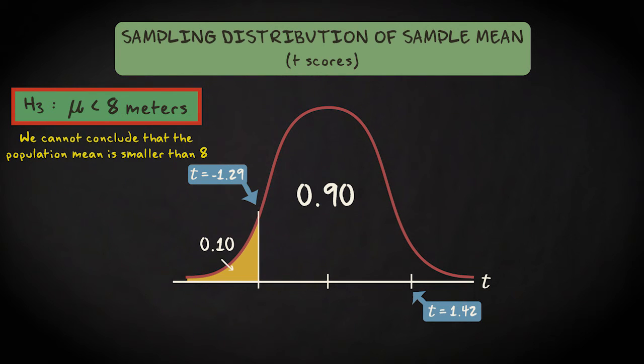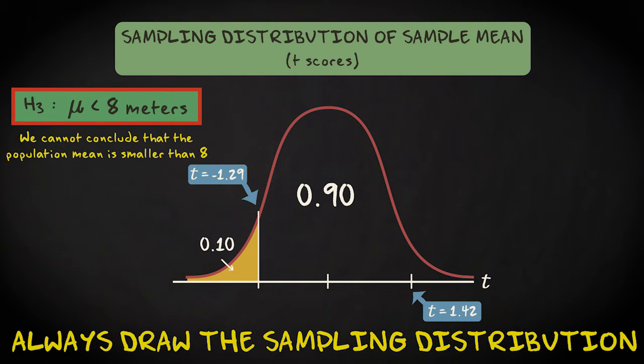This final example shows that it is important to always draw the sampling distribution. Otherwise, you might well fail to notice that the test statistic is located on the other side of the distribution than your critical value.